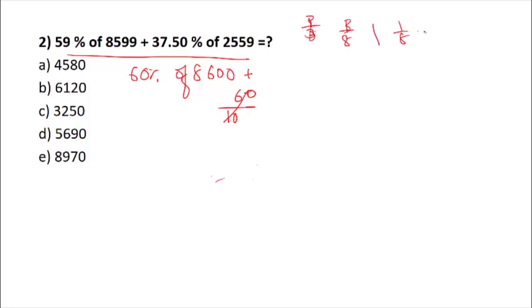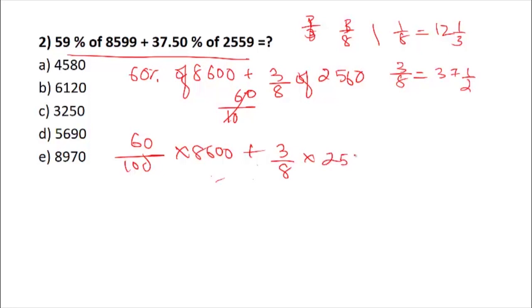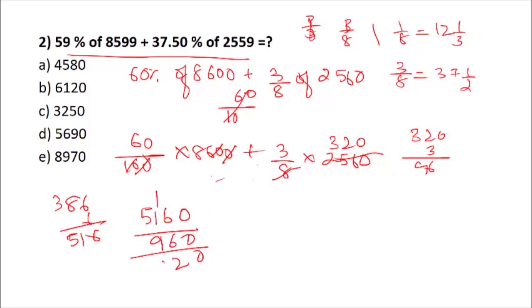1 by 8 is 12.5, so 3 by 8 is 37.5. This can be 2560. Now off is on both sides. If you see here, 86 times 6, that is 516. 320 into 3 would be 960. Now add: 960, 6 plus 6 is 12, carry 1, that's 6120. Your correct option would be B.